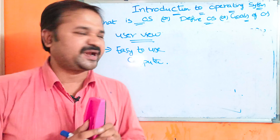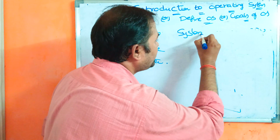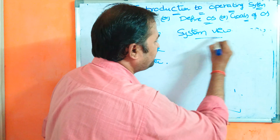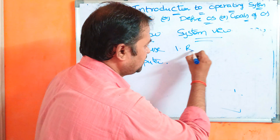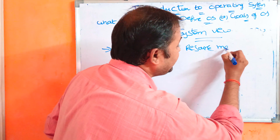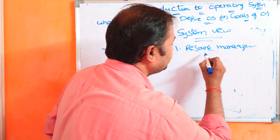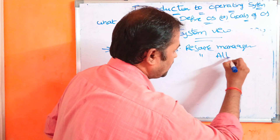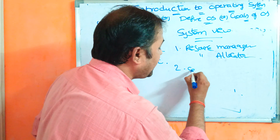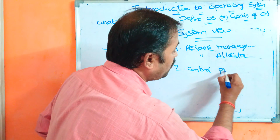So everything will be taken care of by the operating system — we can use the computer very easily with the help of the operating system. Now from the system point of view, the operating system acts as a resource manager, which means a resource allocator. It also acts as a control program.